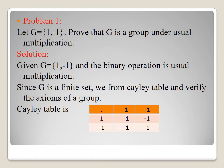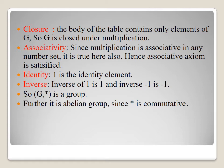Problem 1: let G = {1, -1}. Prove that G is a group under usual multiplication. Solution: since G is a finite set, we form a Cayley table and verify the axioms. The Cayley table gives: 1×1=1, 1×(-1)=-1, (-1)×1=-1, (-1)×(-1)=1. Closure: the table contains only elements of G. Associative property is also satisfied. Identity element: 1 is the identity. Inverse of 1 is 1, inverse of -1 is -1. Therefore it forms a group. Further, it satisfies commutative property, so it is an abelian group.